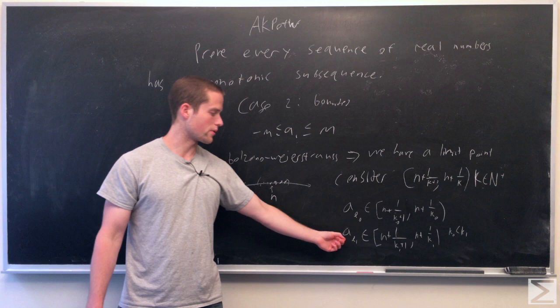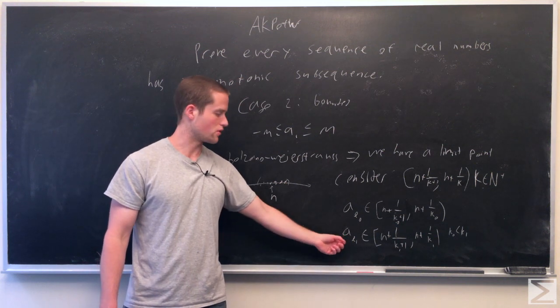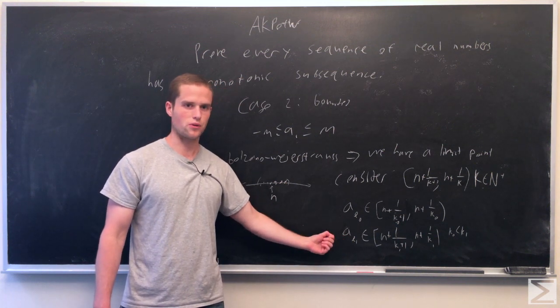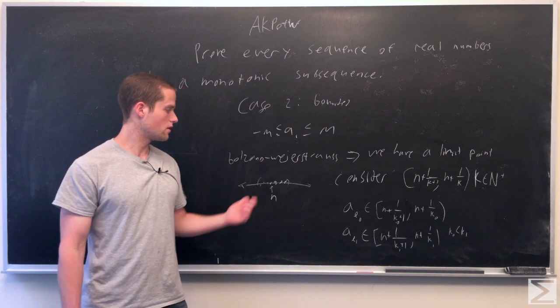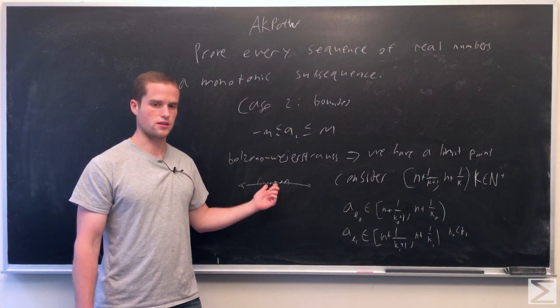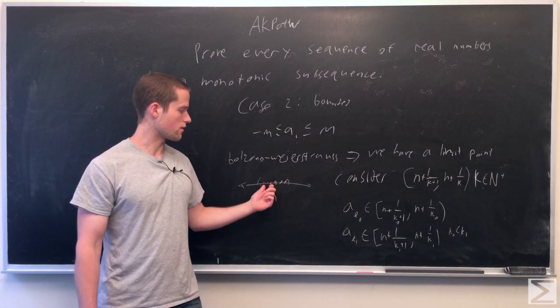We can do this because whenever we ignore the points coming before AL1, that's just a finite number of points. We still have an infinite number of points left, and so we still have an infinite number of points around a neighborhood of n.